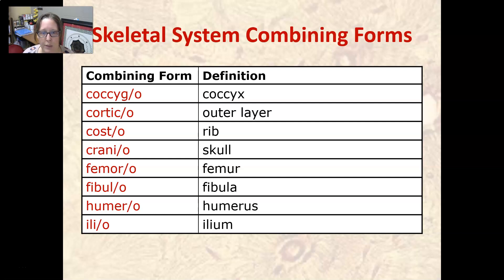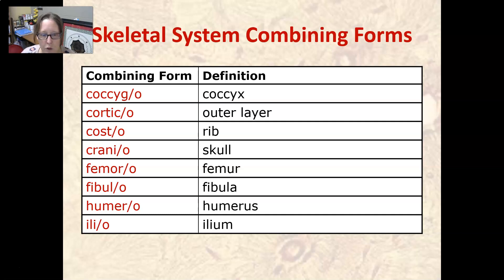Costo means rib. Cranio means skull or cranium. Femoro means femur, which is your thigh bone. Fibulo means fibula. Humero means humerus, which is your arm bone. Ilio means ilium, or hip bone.